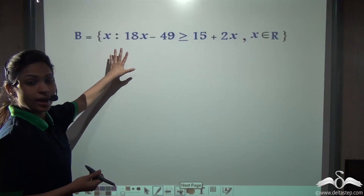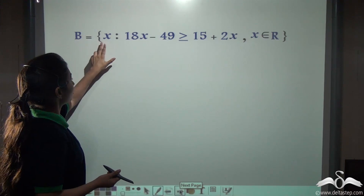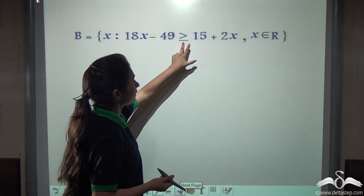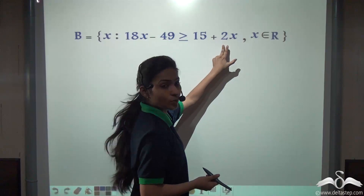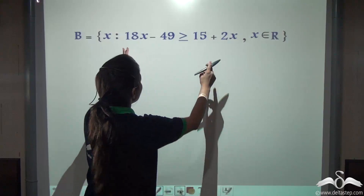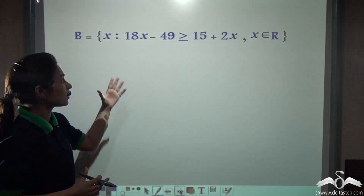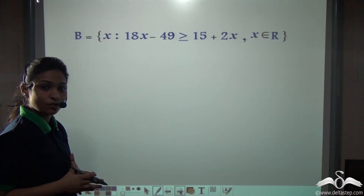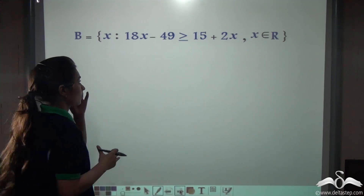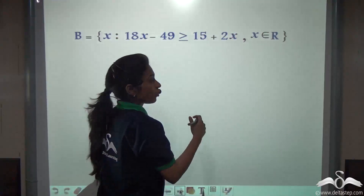Here again, I have an inequation in the form of B equals x such that 18x minus 49 is greater than or equal to 15 plus 2x, and x belongs to R. You can see that this inequation is written in set builder form. So if I ask you to solve this, will you be able to? Do it yourself.